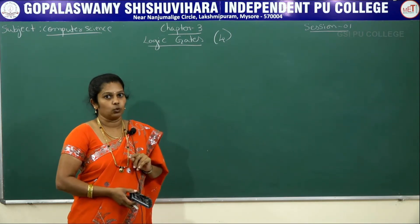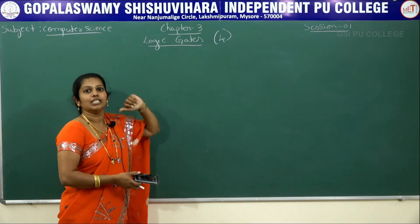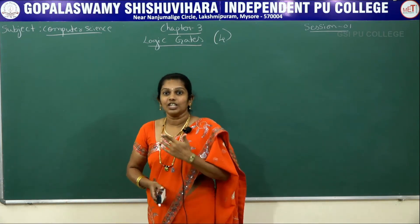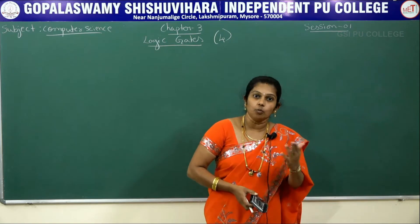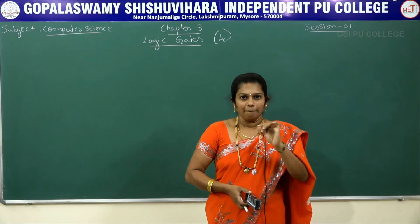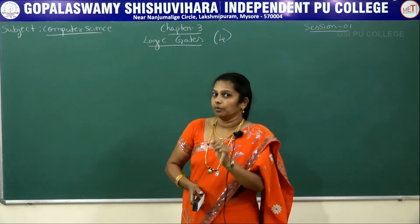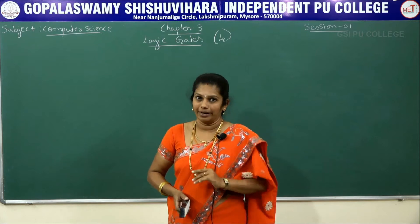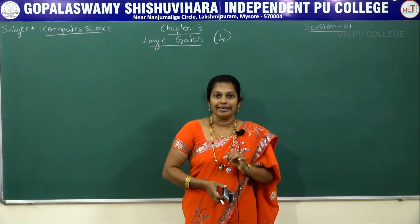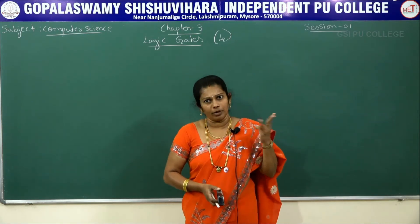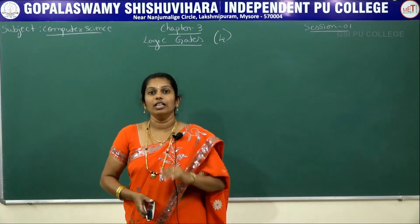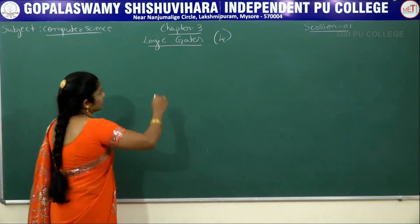What do you mean by gate? First of all, a gate is simply an electronic circuit. It takes one or more input signals and it produces only one output signal. Minimum it takes one input and there is only one output. It means that a gate is an electronic circuit — it takes one or more input signals and it produces only one output signal.